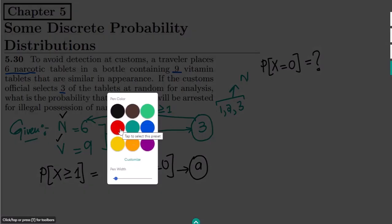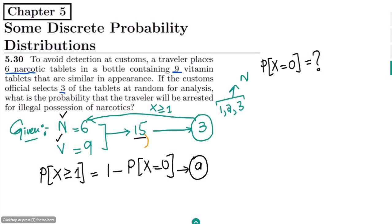Let me write them. This is the total number of items, these are basically the selected number of items, and these are the items which are available here. In order to find X equal to 0, it should be no narcotic item here.